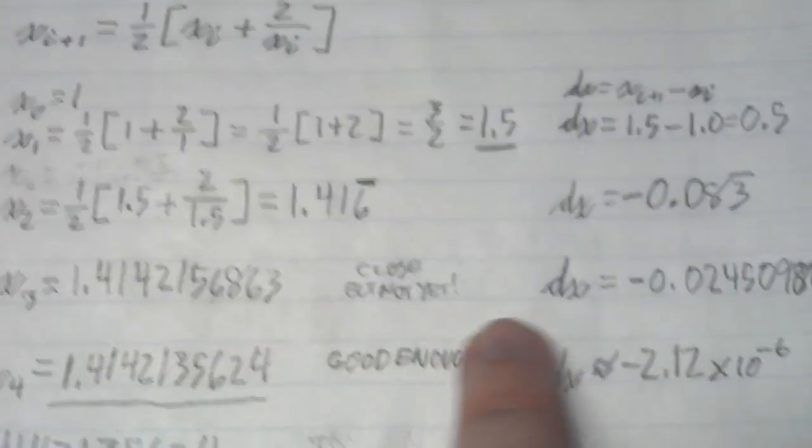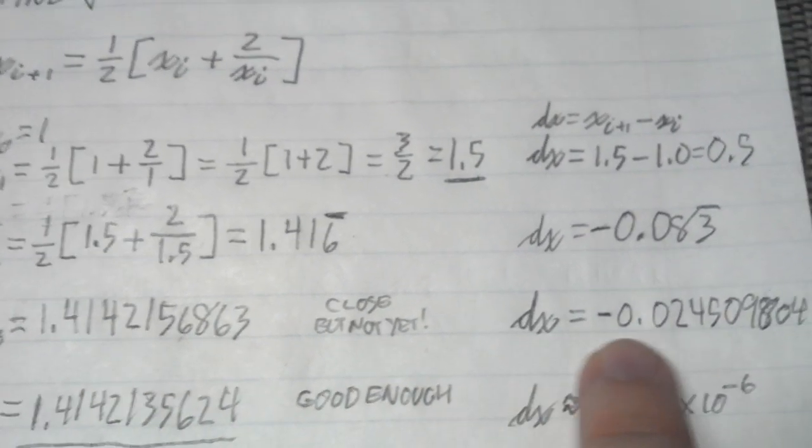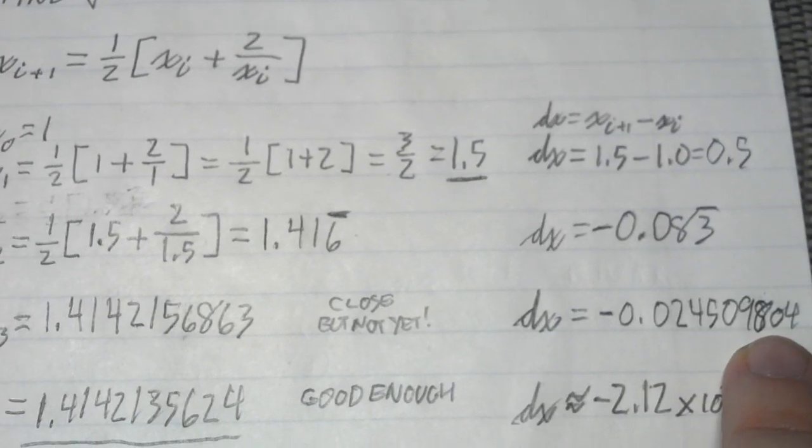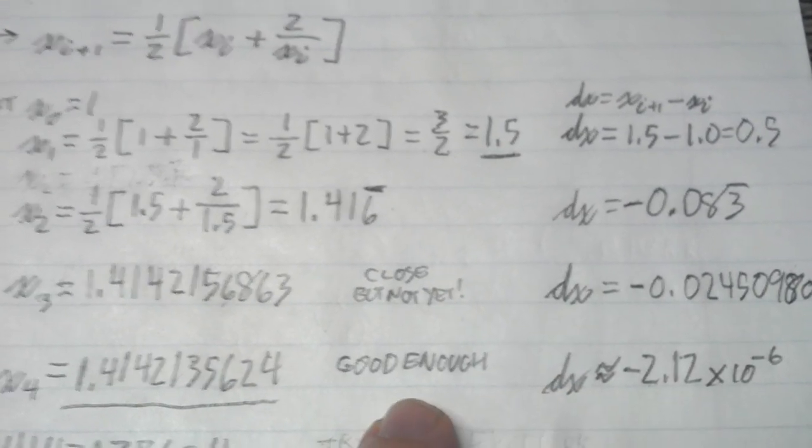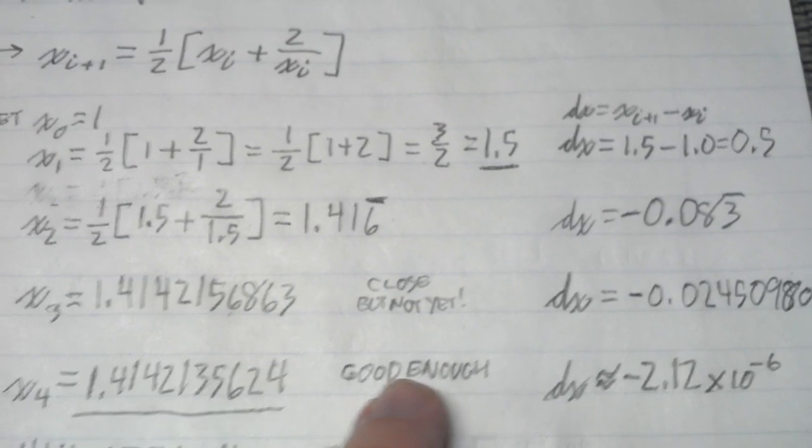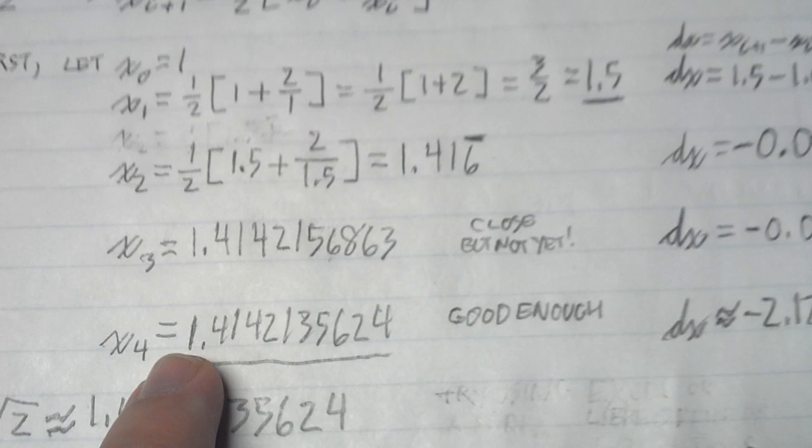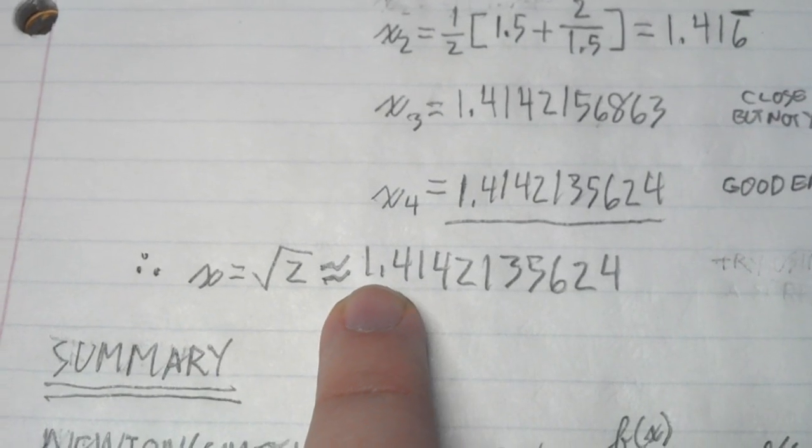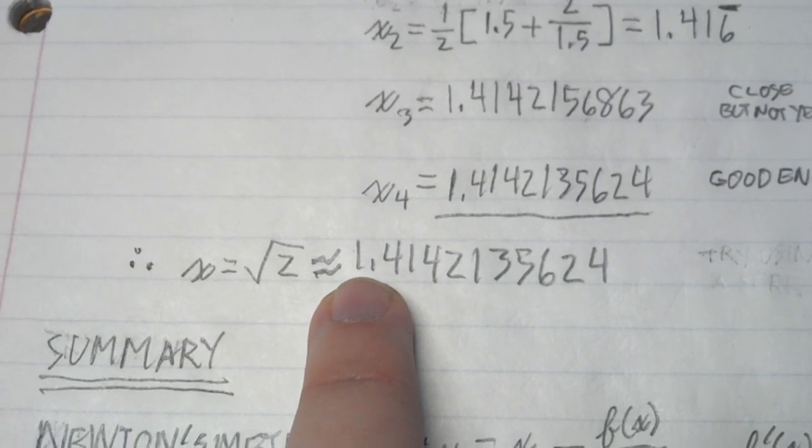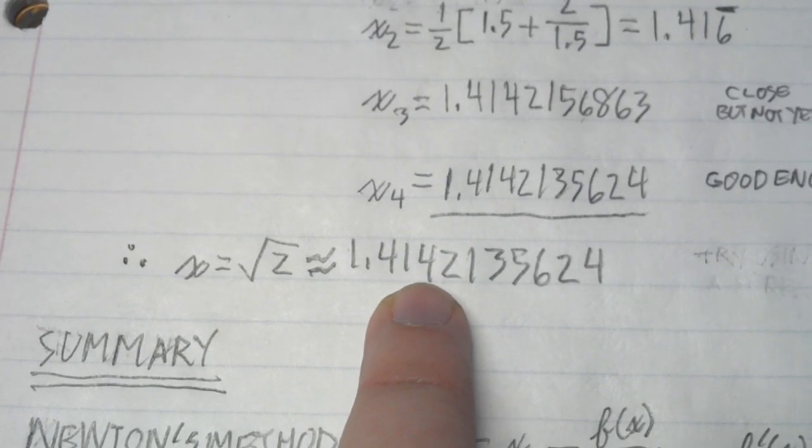Our next answer looks close to the square root, but it's not quite there. When the difference starts looking exponential, we can accept that the next answer is good enough. We end up with our answer of 1.4142135624.